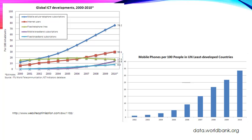The next line shows internet access — 30 out of every 100 people have access to the internet and that's increasing over time. The bar graph on the right shows mobile phones per 100 people specifically in lesser developed countries. It shows the number increased from roughly 1 per 100 in 2002 up to around 33 per 100 in 2010. So mobile phones are quite popular even in developing countries now.